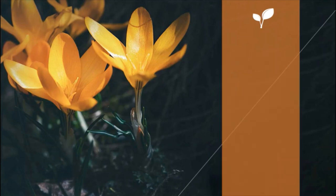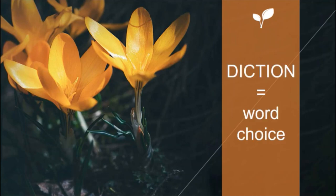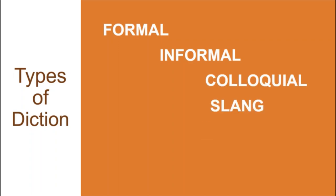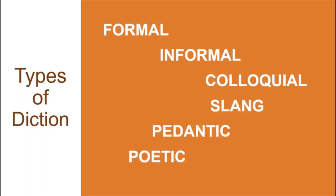What is diction? Diction is a style of speaking or writing that is dependent upon word choice. Good diction refers to the good choice of words used in expressing ideas. It also involves how words were arranged, their appropriateness, effectiveness, accuracy, and distinction with which they were used. The choice of words should be understood by readers and listeners easily. It also includes how words were enunciated. We will be discussing six types of diction: formal, informal, colloquial, slang, pedantic, and poetic. Let's discuss them one by one.